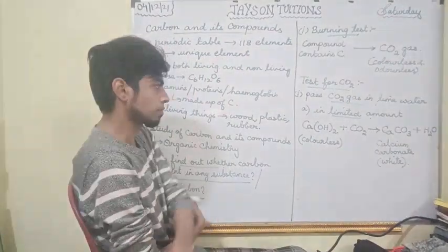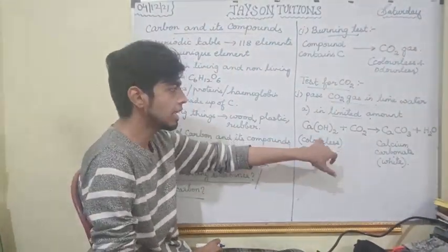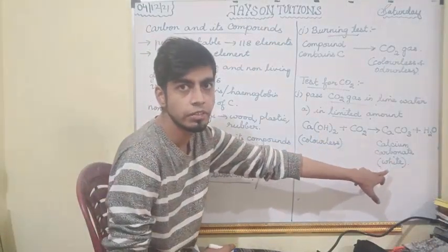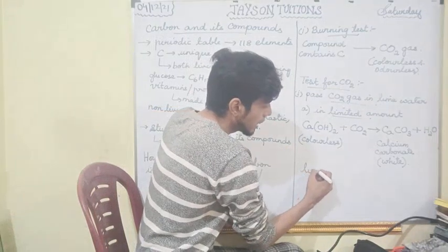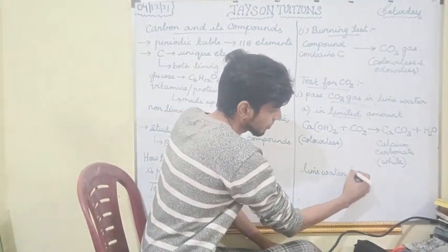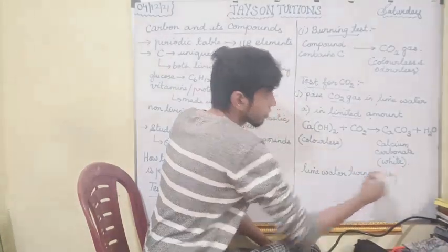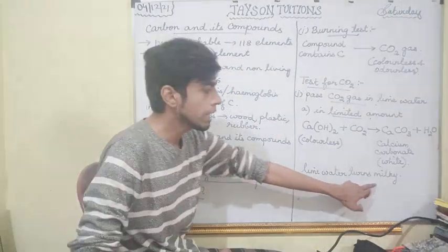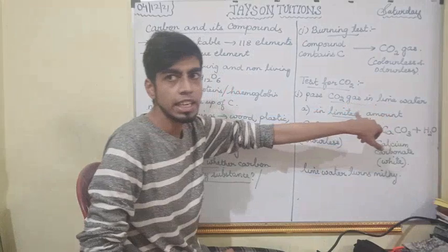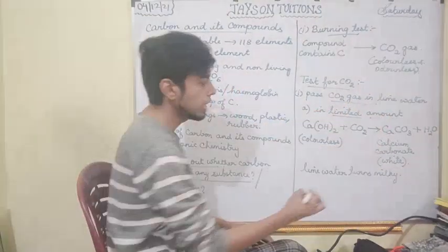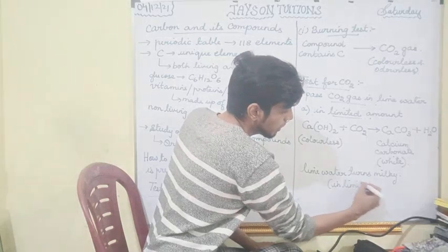So the colorless lime water, when carbon dioxide is passed in limited amount, turns white — we say the lime water turns milky. Only when it is a limited amount does the lime water turn milky.